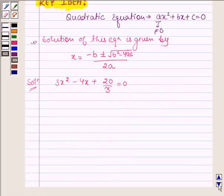Now on comparing it with the standard form of the quadratic equation we find that a = 3, b = -4, and c = 20/3.